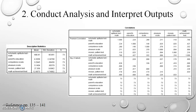SPSS generates a series of outputs. The descriptive statistics table shows that this analysis was based on data from 73 cases. Looking back at the HSB data file, there are 75 rows or cases, but because SPSS only conducts analyses on complete cases, there are only 73 cases with complete data.